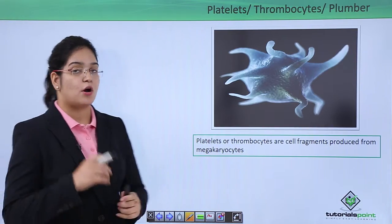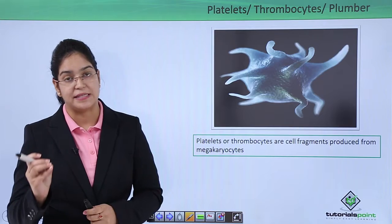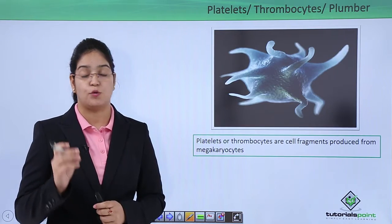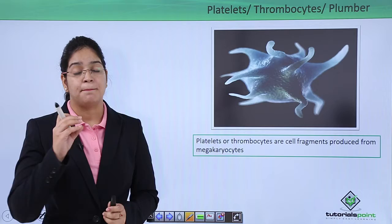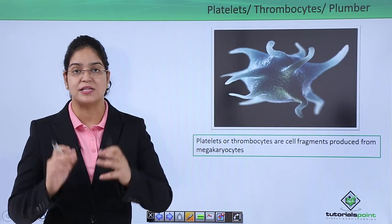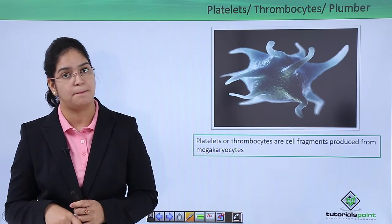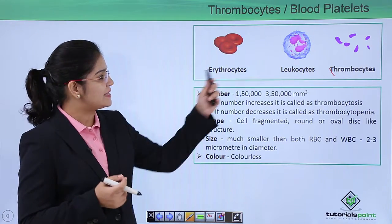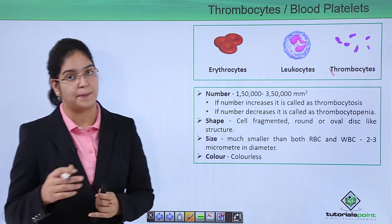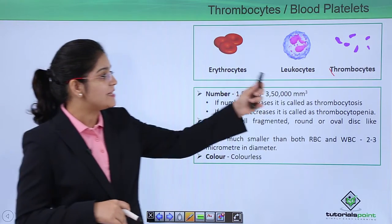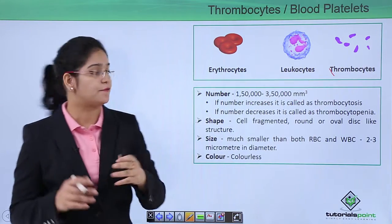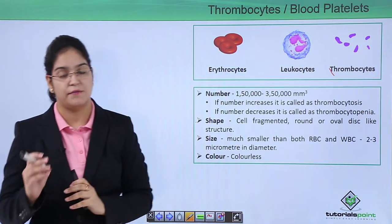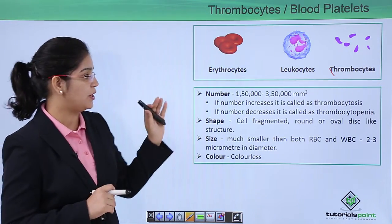So we can say the thrombocytes or platelets are the plumbers of our body. Platelets or thrombocytes are fragments made up of megakaryocytes. Megakaryocytes are the larger cells of red bone marrow. The size of thrombocytes is very much smaller than red blood cells and white blood cells.